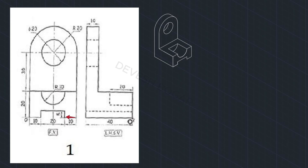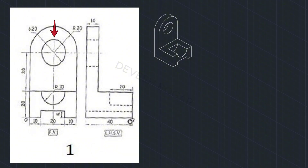The 5mm gap is also shown in the left-hand side view by the hidden line. The semicircle in the front view is also shown in the left-hand side view, which goes till the middle of the object — around 20. The inner circle has a radius of 10 millimeters and the outer circle has 20 millimeters.